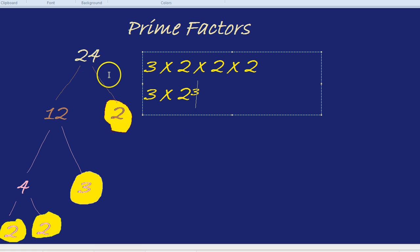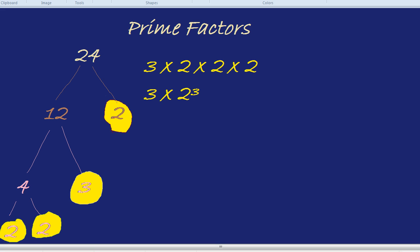So there we have it. 24 is, if I draw an arrow, 24 is 3 times by 2 to the power of 3. That's what 24 is if you break it down into its prime factors.